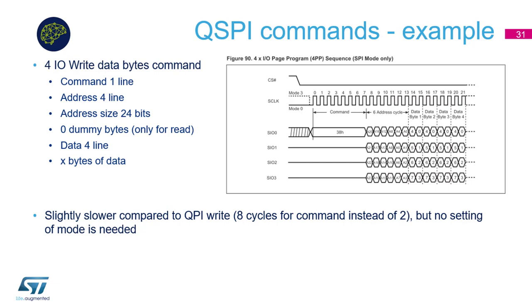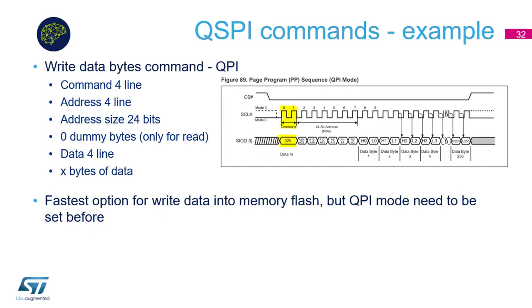The four-line write command is defined as 0x38 and the command itself still runs on one line, which is slightly slower compared to QPI write, but no QPI mode configuration is needed. The fastest option for writing data is QPI programming — it uses four lines even for the command, but QPI mode must be set before use.